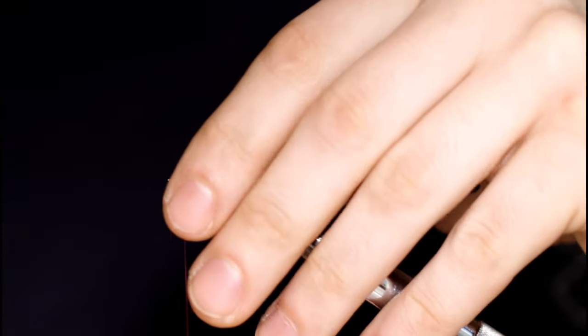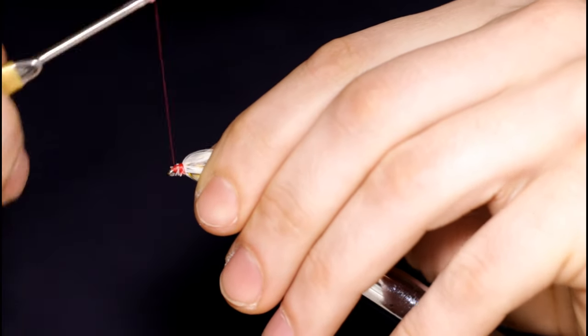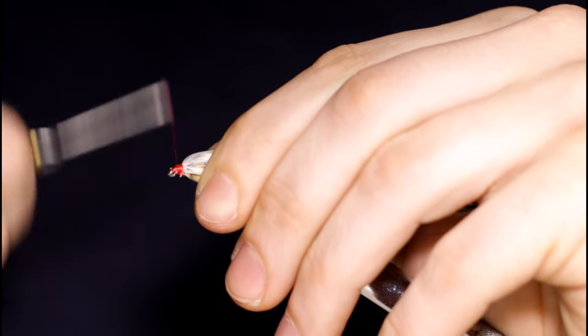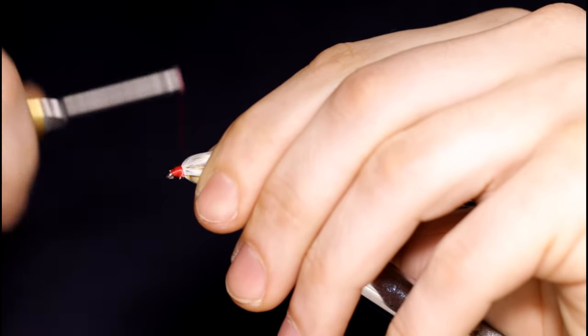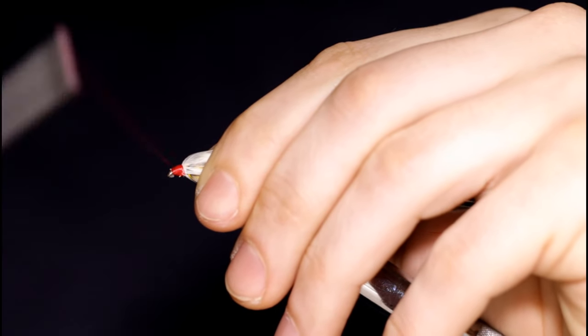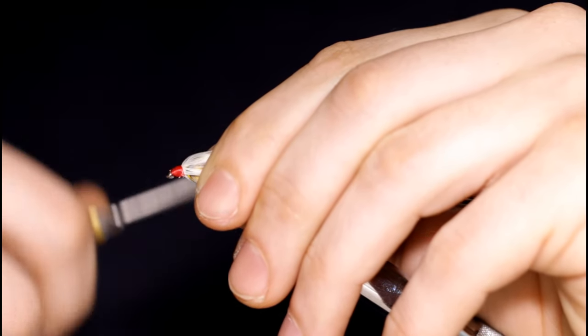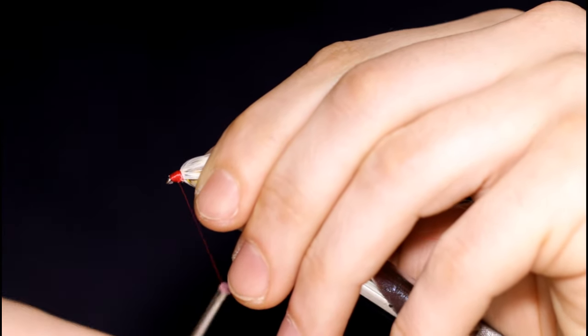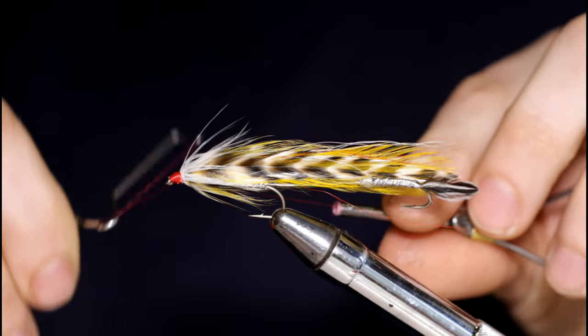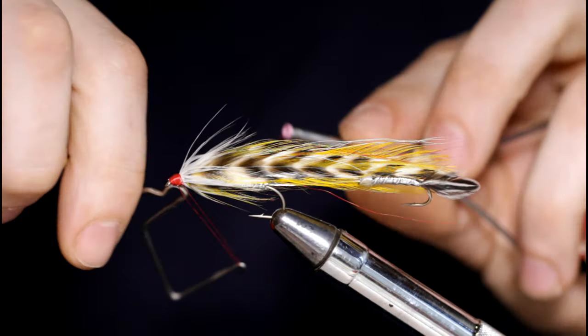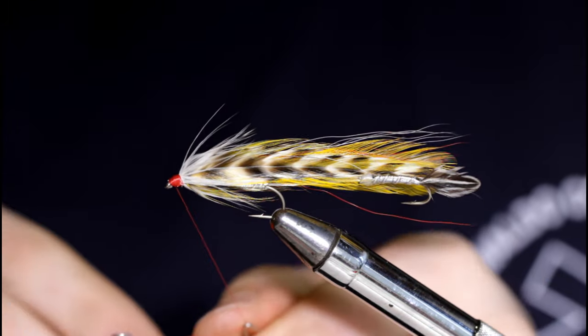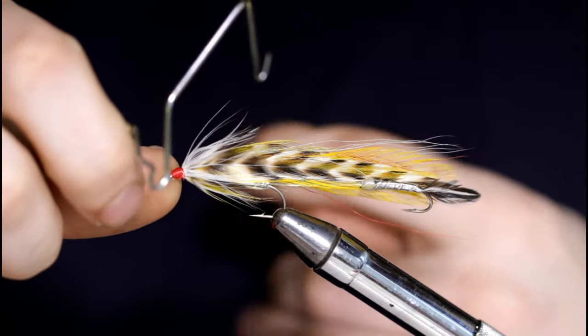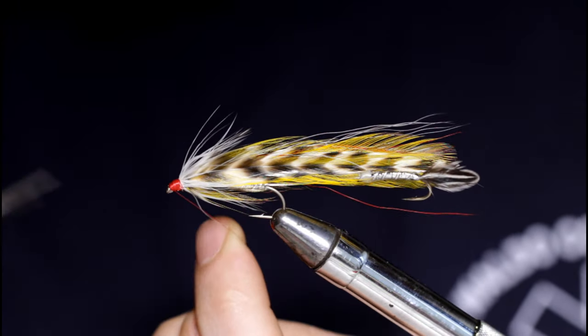Now it's time to build up the head and that will be a finished fly. So just level this out. Come in with my whip finish tool and make a couple neat whip finishes. And snip the thread off. Now come in with a head cement of your choice here and hit this head.